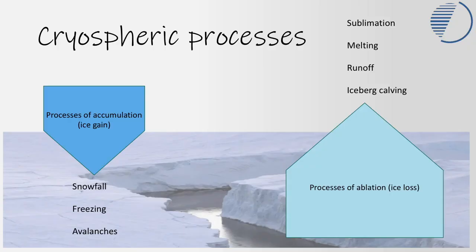Like all parts of the water cycle on Earth, cryospheric processes operate in a system of inputs and outputs. The process of accumulation includes snowfall, freezing, and avalanching onto glaciers — these are areas of net ice accumulation where ice is building up. We also have losses, called ablation: the loss of ice through sublimation, melting, runoff, or icebergs calving into the ocean.